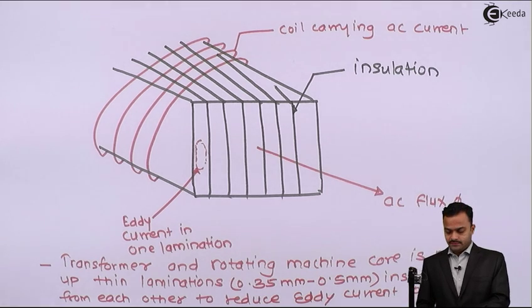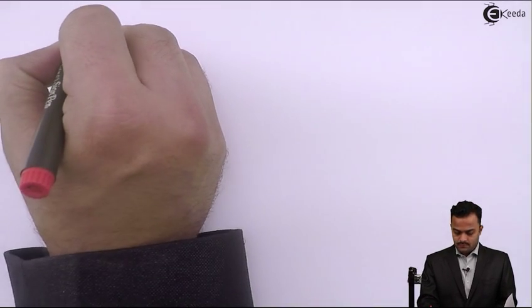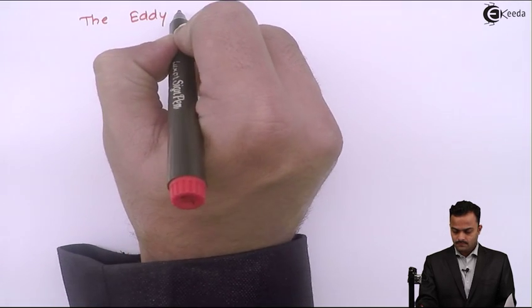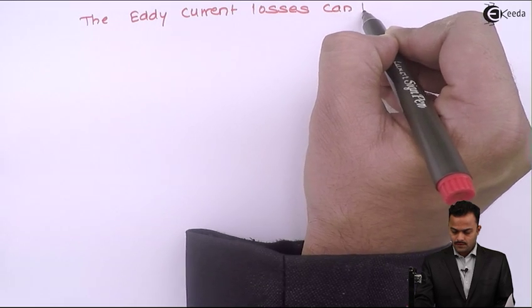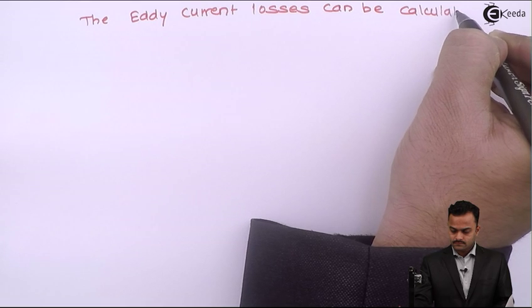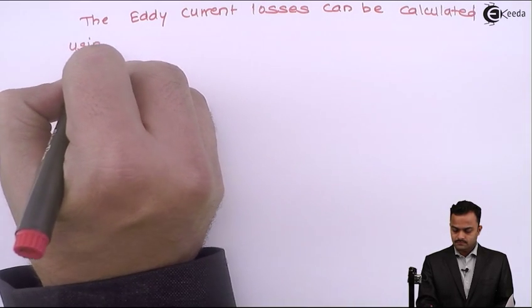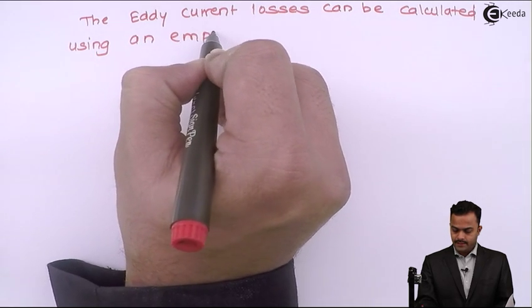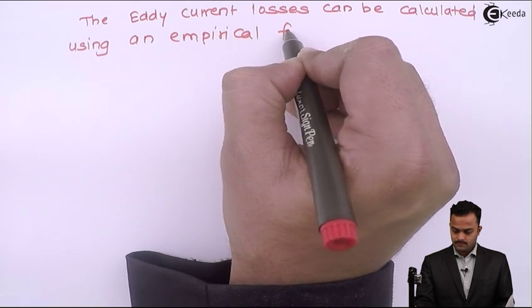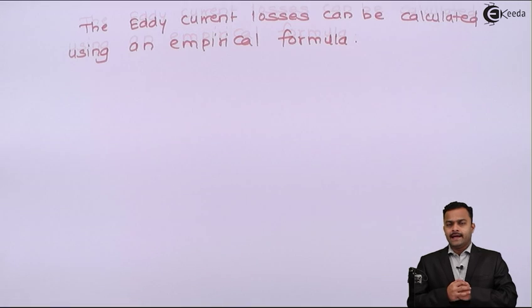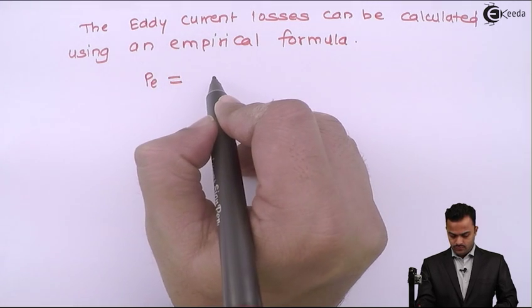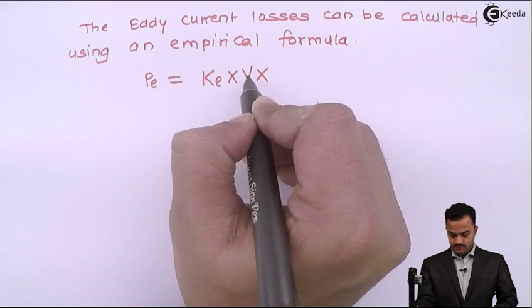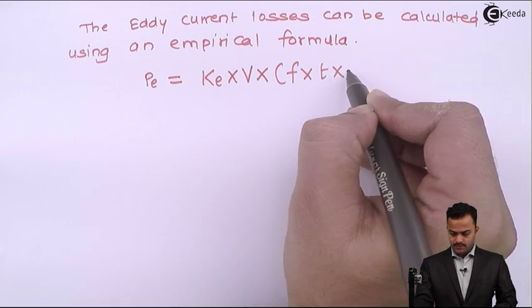Now let's see the empirical formula of this. So the eddy current losses can be calculated using an empirical formula which says: Pe = Ke × V × f × t × Bmax².